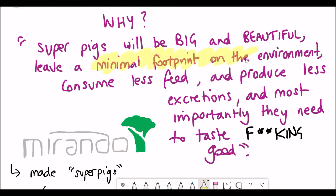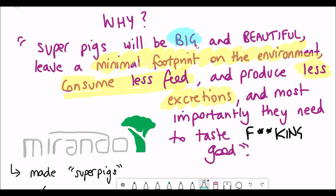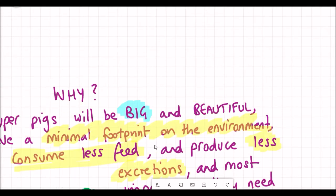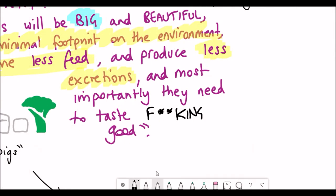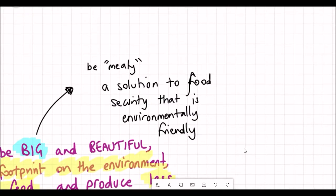Being able to generate food that has a minimal footprint on the environment, that would consume less feed and have less excretions, reducing methane CO2 production to reduce the effects of climate change, are all really important problems that we need to face in the food industry. I guess the idea of it being big is to be more meaty and to provide more food per animal. And I guess tasting good isn't really that important, but I think that's in the film for that dramatic effect.